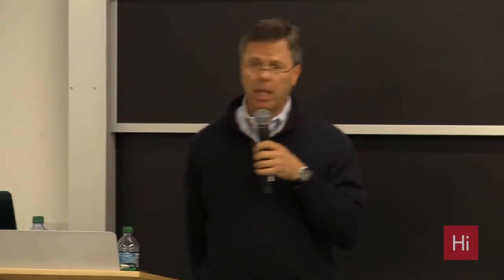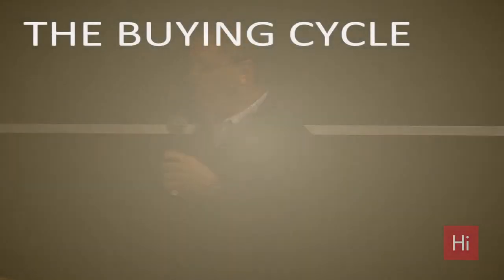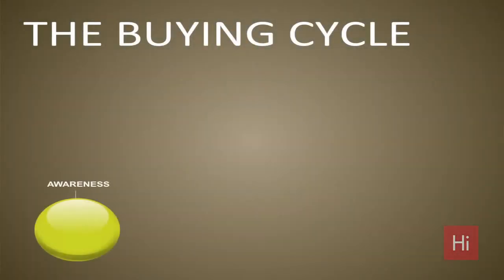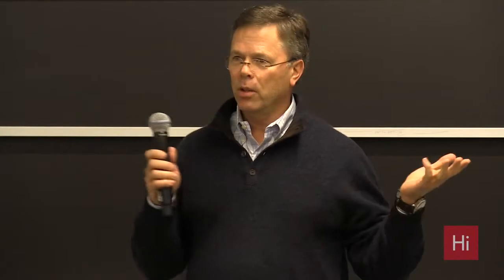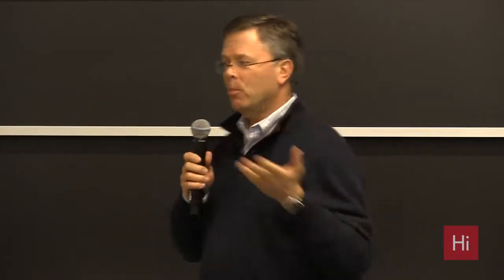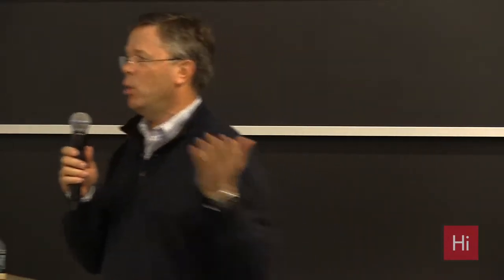The art of marketing is really figuring out how to take what should have been that one-step instant buy button and designing a series of steps that effectively answer each one of those questions. My buying cycle has three stages — awareness, consideration, and purchase. Let me give you a little example of what we're thinking about here.